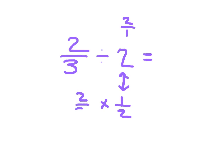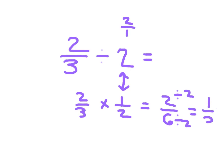So really we're going 2 thirds times 1 half. 2 times 1, which is 2. 3 times 2, which is 6. And then we have to simplify that. 2 divided by 2 is 1, and 6 divided by 2 is 3. So 2 thirds divided by 2 is equal to 1 third.